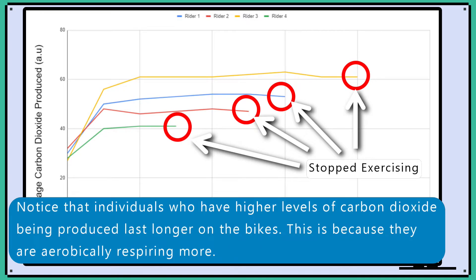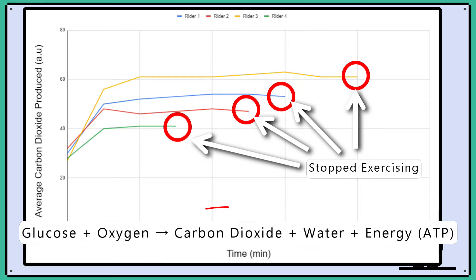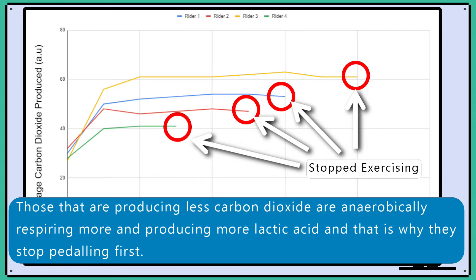Notice that individuals who have higher levels of carbon dioxide produced last longer on the bikes. This is because they are aerobically respiring more. Remember, carbon dioxide is a product of aerobic respiration. Those that are producing less carbon dioxide are anaerobically respiring more and producing more lactic acid, and that is why they stop pedalling first.